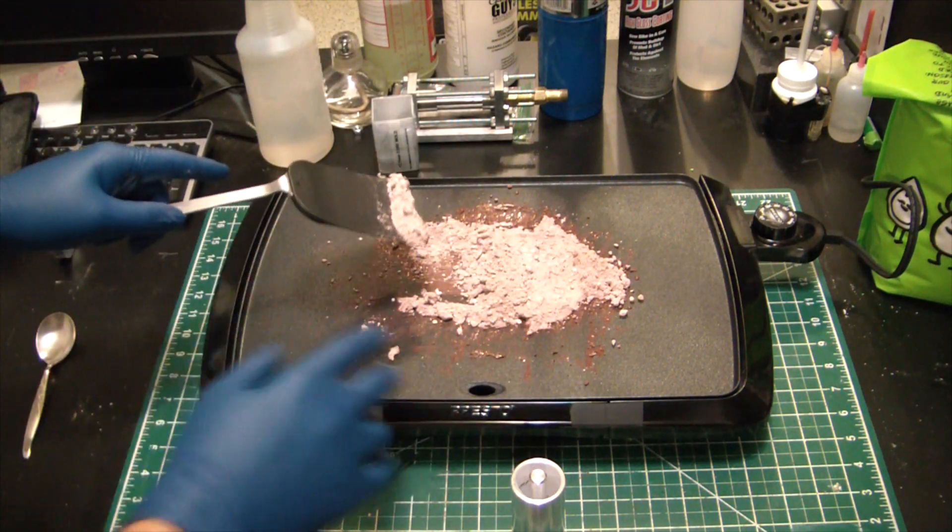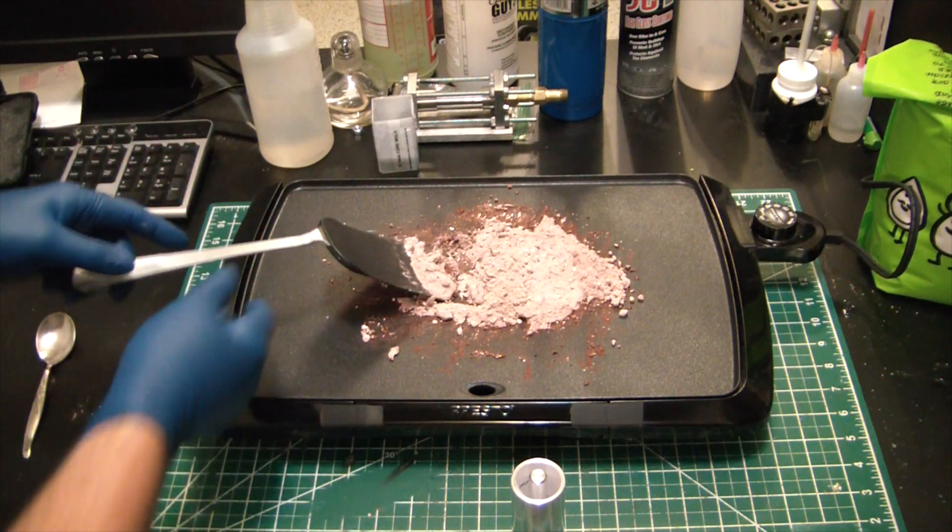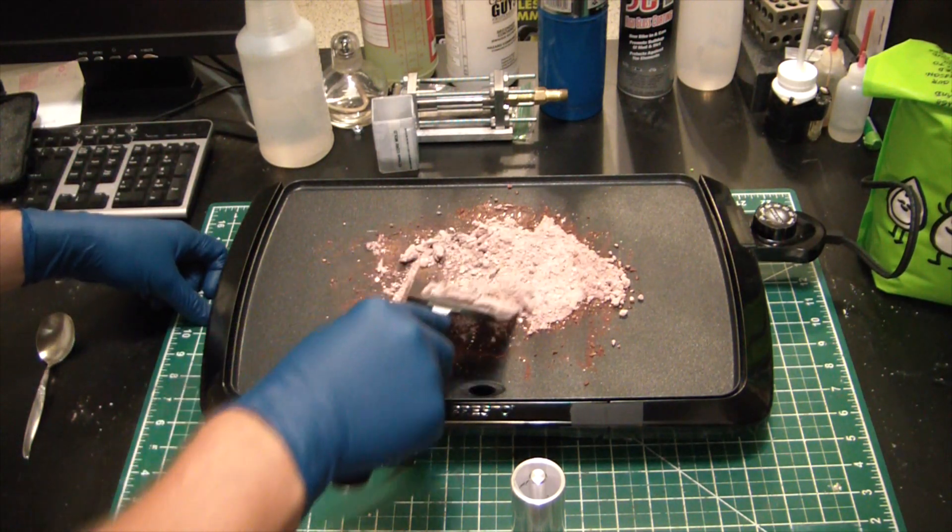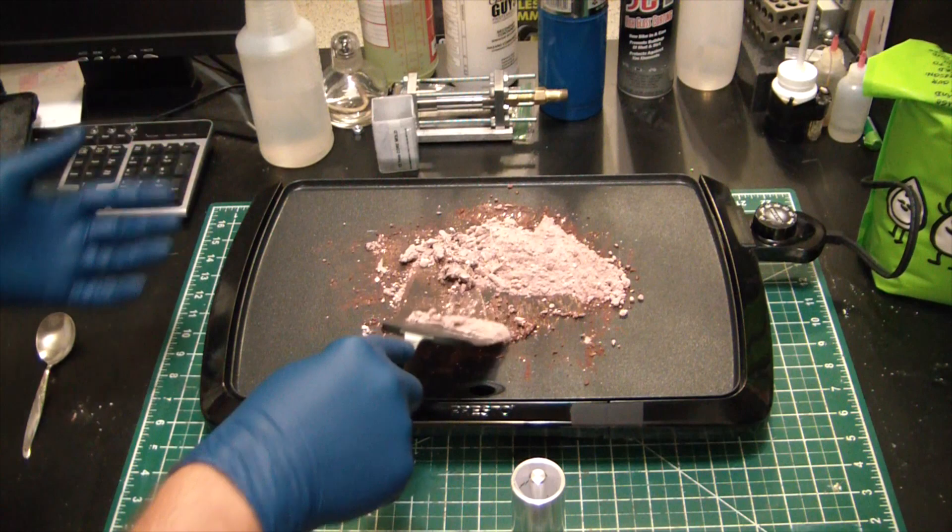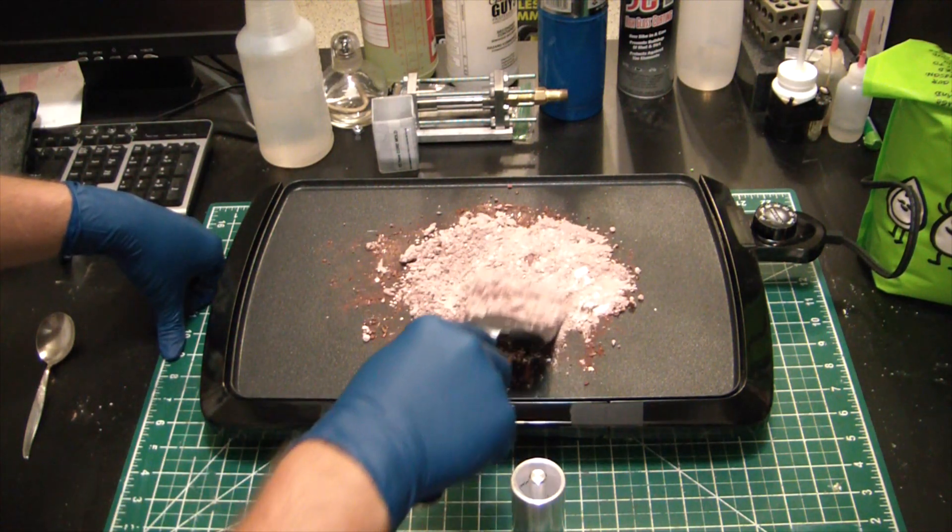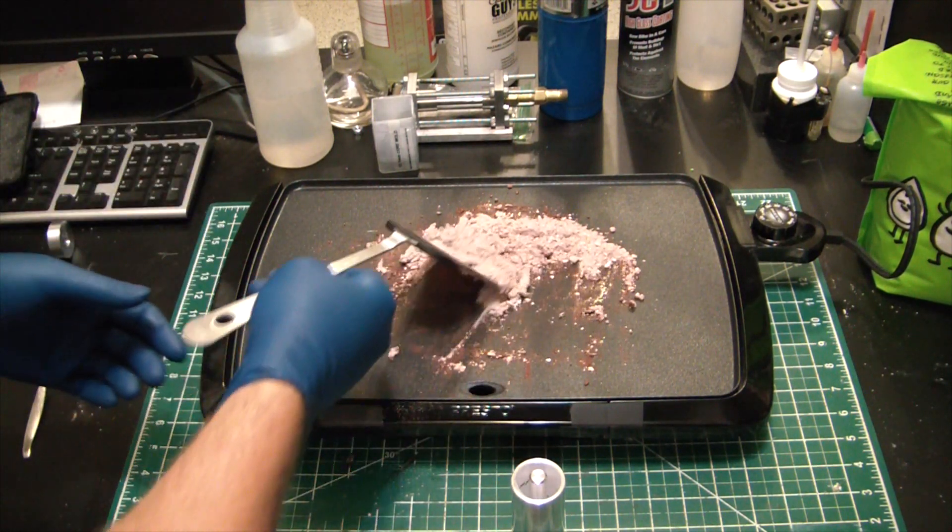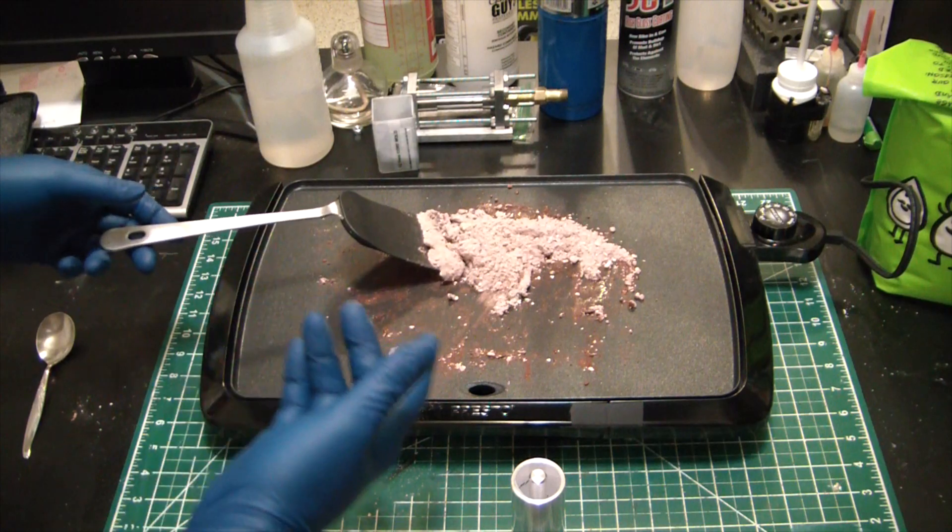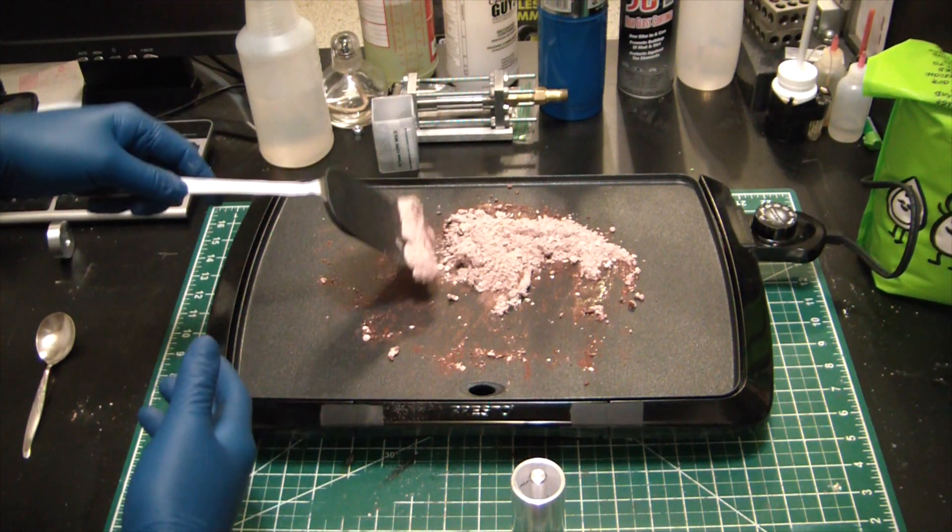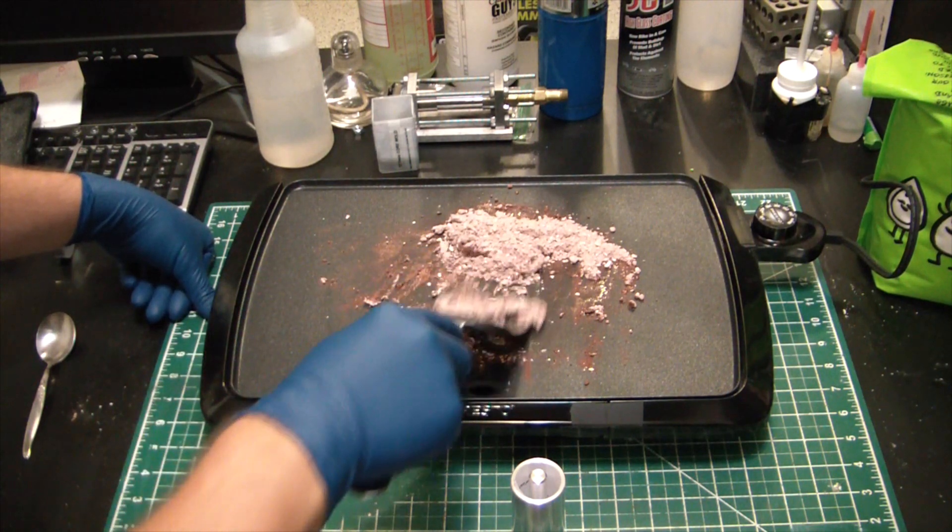One thing to keep in mind if you're working with candy rocketry - sorbitol is by far my favorite propellant just because of the ease of melting it and the safety factor. Sucrose takes a higher temperature to work with.